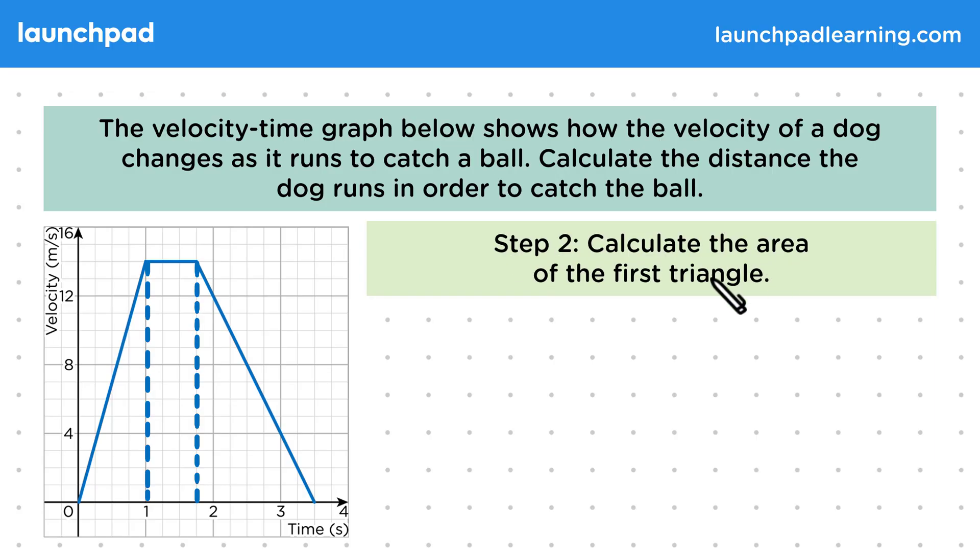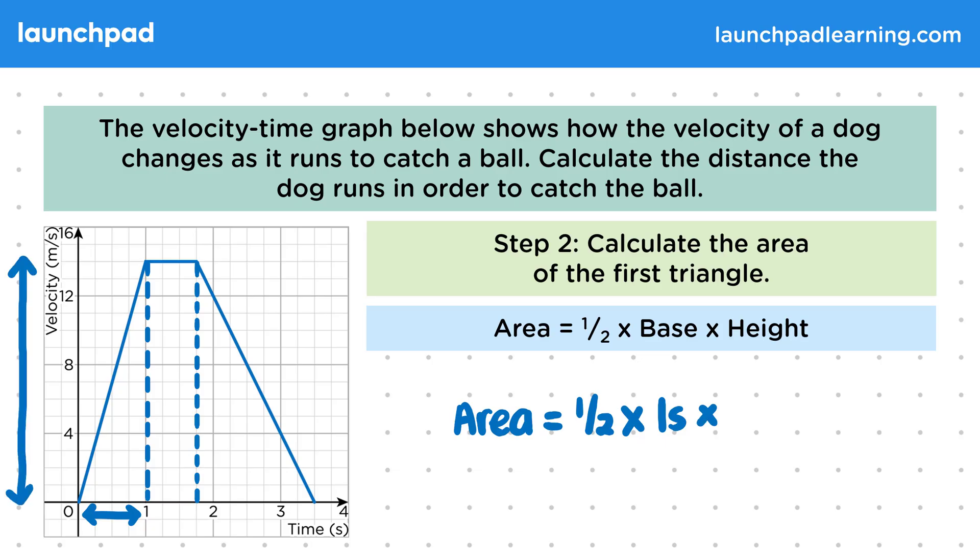For step 2, calculate the area of the first triangle. To do this, we'll be using the formula area equals half times base times height. So we have that the area is equal to a half times, and then our base is the change in time, which is 1 second, and the height is the change in velocity, which is 14 metres per second. These units have come from the axes labels on the graph. So after doing the multiplication, we find the area of this triangle represents an area of 7 metres.